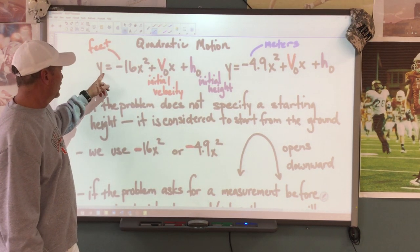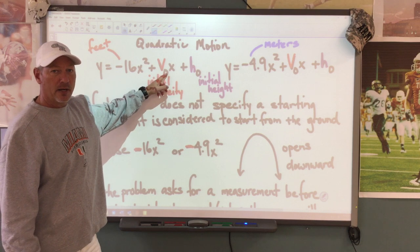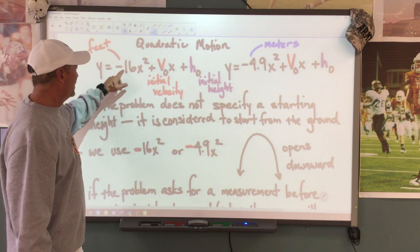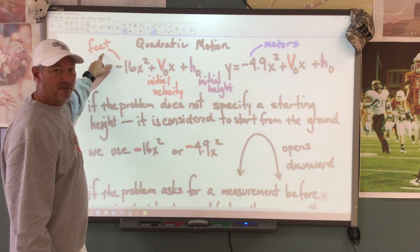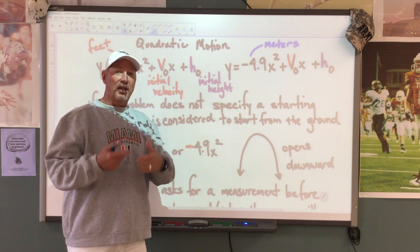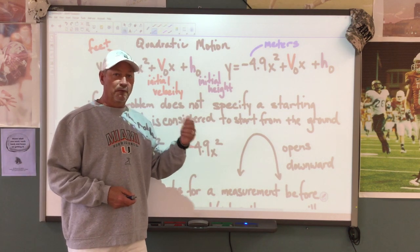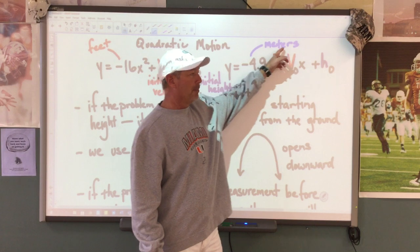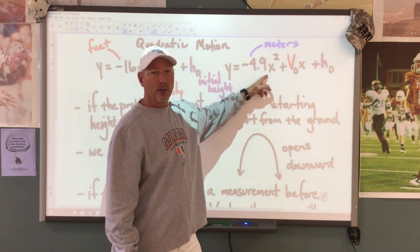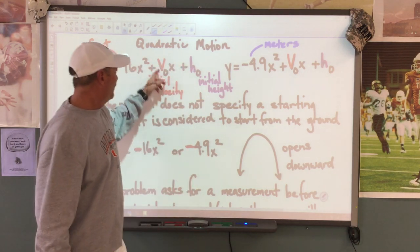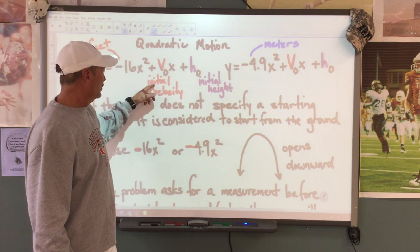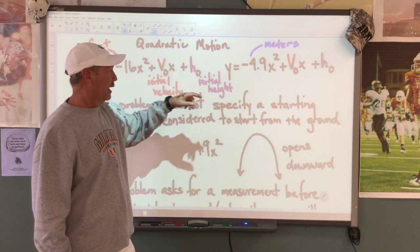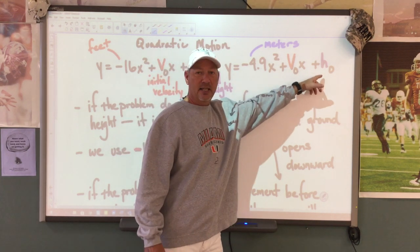We're going to give you an equation that says y equals negative 16x squared, or y equals negative 4.9x squared. We're going to use the one with negative 16 if we measure things in feet — if the height's in feet, if our velocity is feet per second, anything that deals with feet. If our problem uses meters, then we'll use negative 4.9x squared. The v with subscript 0 stands for initial velocity, and h with the subscript is initial height. Same thing with the meters — initial velocity, initial height.